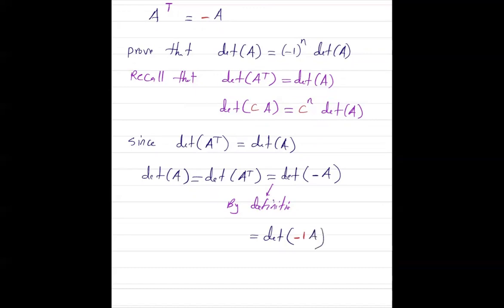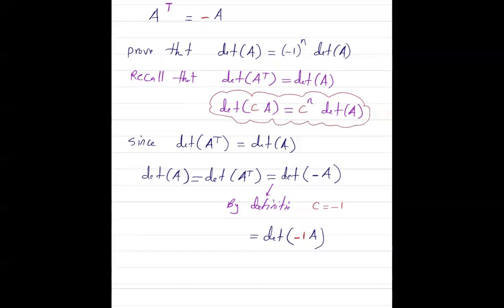As you can see, C is equal to negative 1, and following the relation between the determinant of C times A and the determinant of A, this is equal to negative 1 to the power n times the determinant of A. So we have just proved this property.